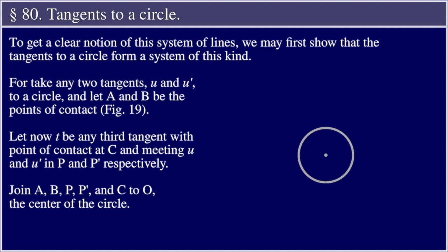Section 80: Tangents to a Circle. To get a clear notion of this system of lines, we may first show that the tangents to a circle form a system of this kind. For take any two tangents, u and u', to a circle, and let A and B be the points of contact.